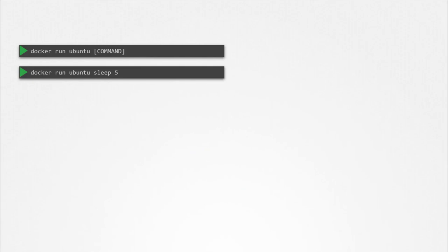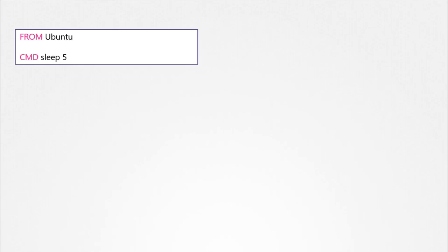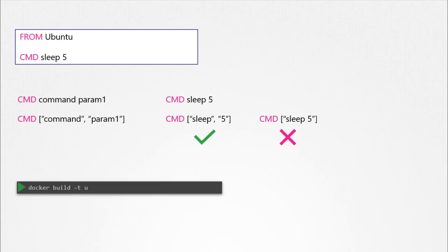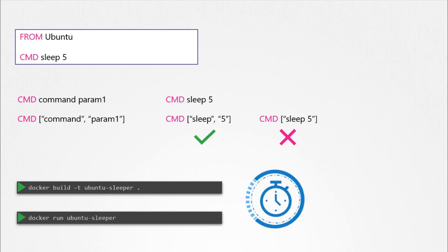But how do you make that change permanent? Say you want the image to always run the sleep command when it starts — you would then create your own image from the base Ubuntu image and specify a new command. There are different ways of specifying the command: either in a shell form, or in a JSON array format. When you specify in JSON array format, the first element in the array should be the executable — in this case, the sleep program. The command and its parameters should be separate elements in the list. I now build the new image using the docker build command and name it ubuntu-sleeper. I could now simply run docker ubuntu-sleeper and get the same results — it always sleeps for five seconds and exits.